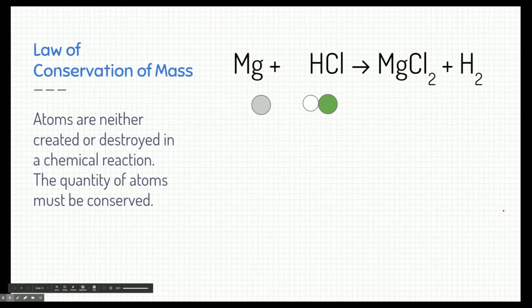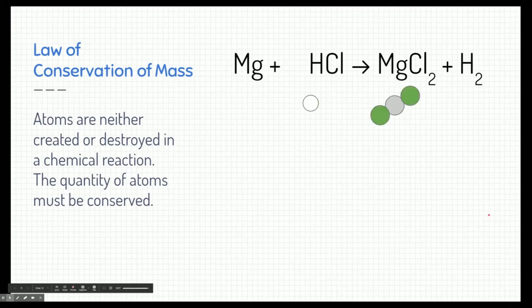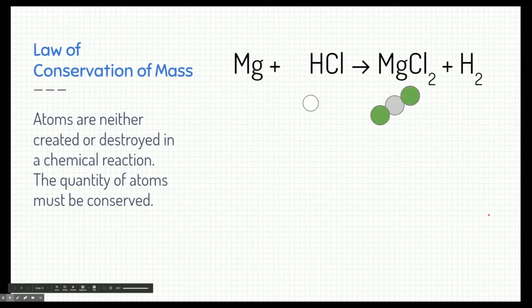I want to look at this equation with a little bit of detail and relate it to the law of conservation of mass. The law of conservation of mass states that atoms are neither created nor destroyed in a chemical reaction, and the quantity of atoms must be conserved. Looking at our reaction: we started with one magnesium and one chlorine, but on the product side we somehow added an extra chlorine — and we can't magically create an atom out of nowhere. Same thing with hydrogen: the product side says H2, so where did that extra hydrogen come from? This reaction is not correctly written, at least not yet.